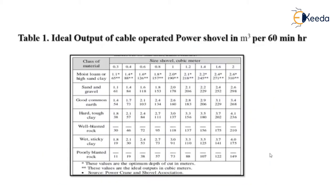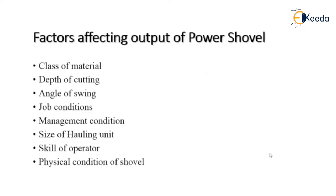This table shows the ideal output for a cable-operated power shovel. The factors affecting the output are: class of material, depth of cut, angle of swing, job conditions, management conditions, size of hauling unit, skill of operator, and physical condition of the shovel.